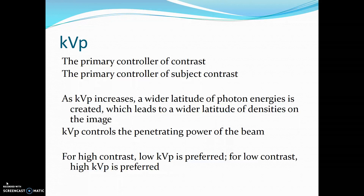As KVP increases, a wider latitude of photon energies is created, which leads to a wider latitude of densities on the image. KVP also controls the penetrating power of the beam.